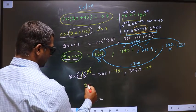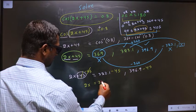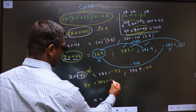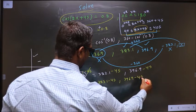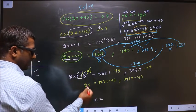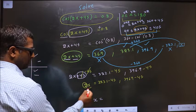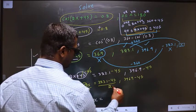Now to get x, I should remove this 2. For that I divide by 2.